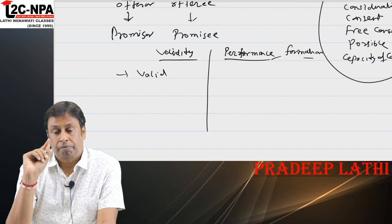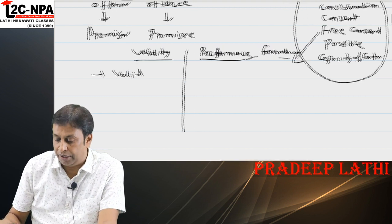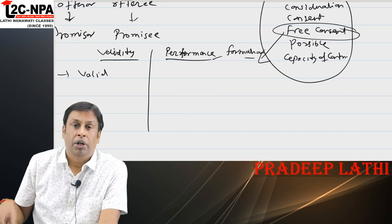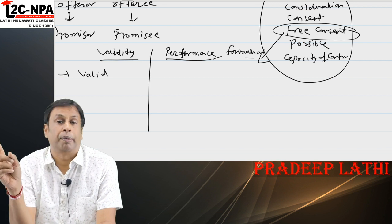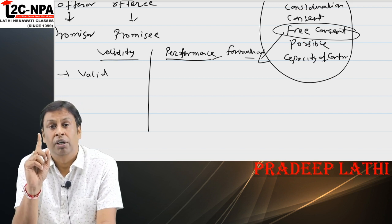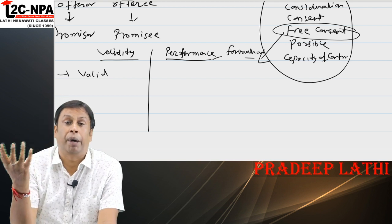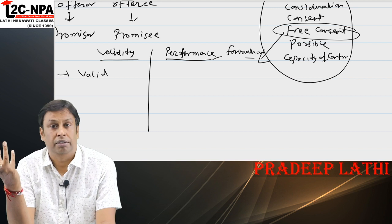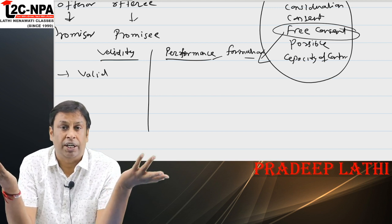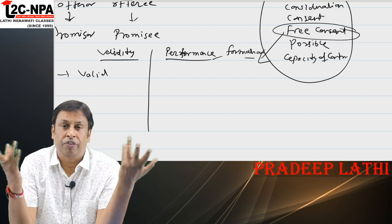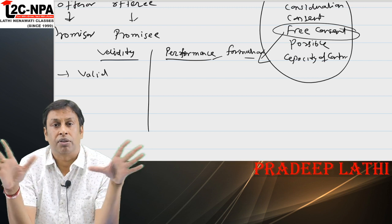Voidable contract: there is a problem with only one factor, which is free consent. It is enforceable at the option of one party but not at the option of the other. It is enforceable at the option of the aggrieved party whose consent was not freely taken. That party may accept it or may go to court, and if the court proves free consent was not given, the contract can be cancelled.